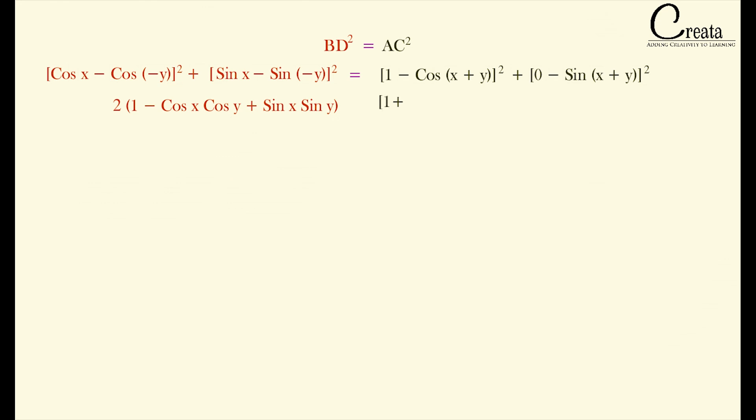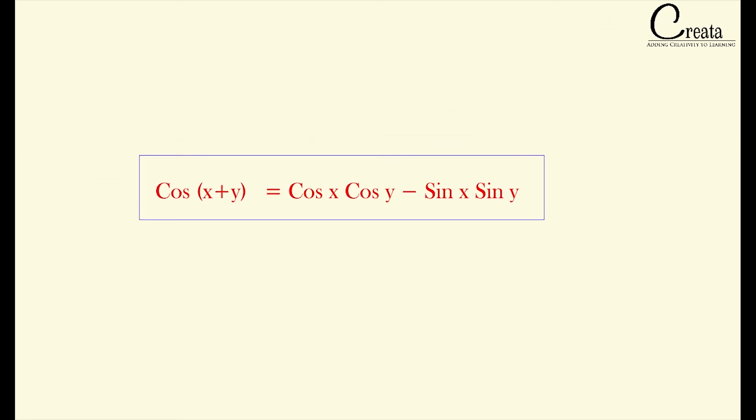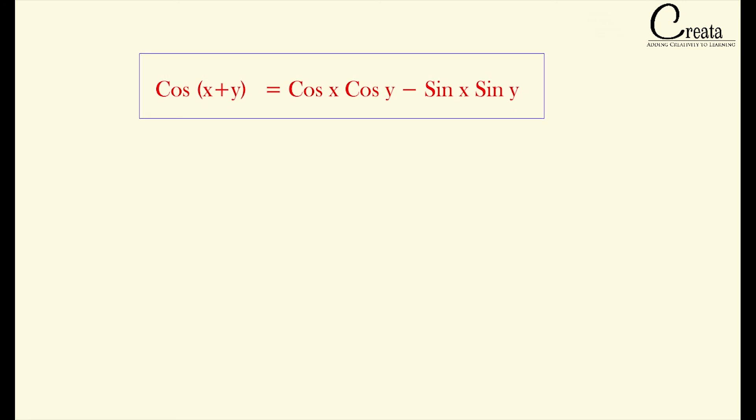Do the same thing with right hand side. Same basic formulas and basic algebra. We got this output. Now solving left hand side and right hand side, we got our first formula as cos x plus y is equal to cos x into cos y minus sin x into sin y. This is the first and the basic formula under trigonometric sum and difference category.